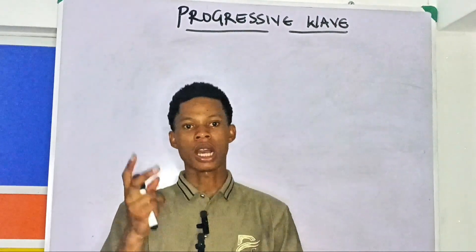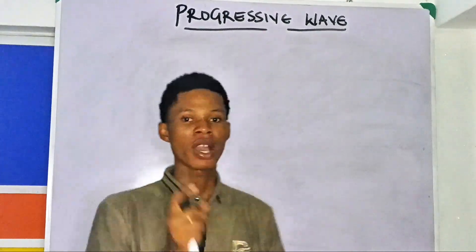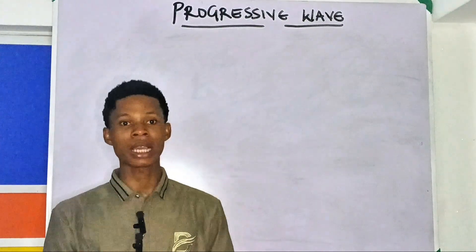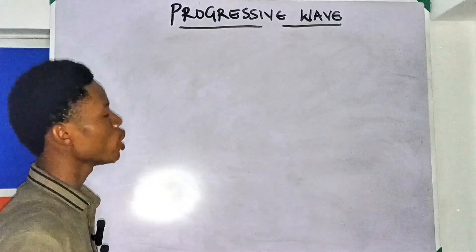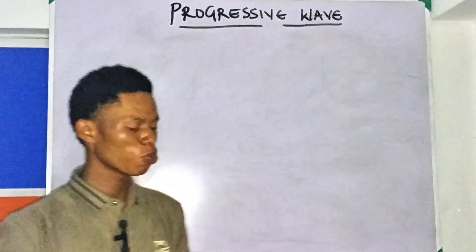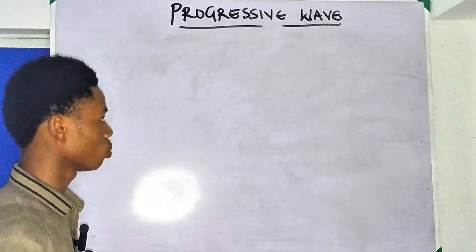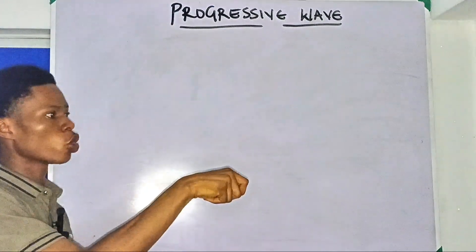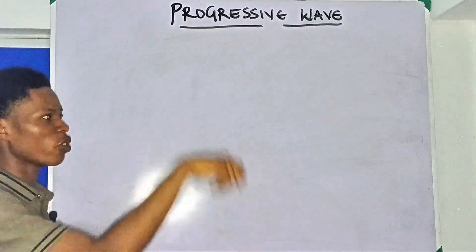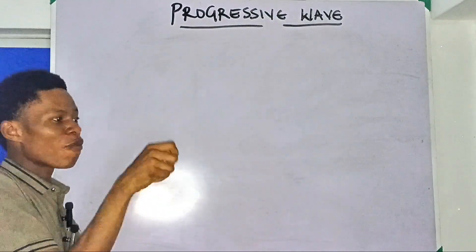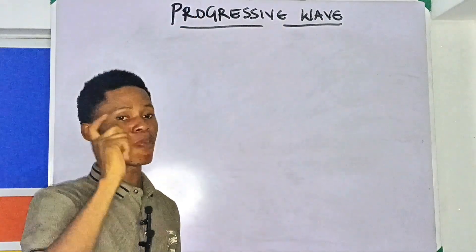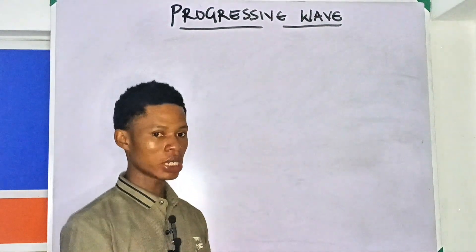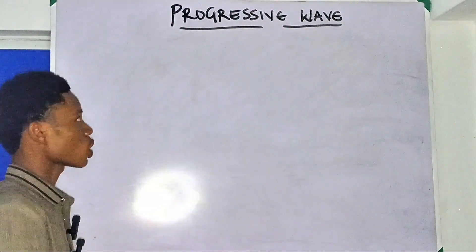Welcome back. In today's video we are going to be looking at progressive waves. I have previously treated stationary waves, so if you missed that video you can go back and watch it. A progressive wave is any wave that spreads out from a vibrating source, transmitting energy from one point to another. A stationary wave is just standing, but a progressive wave is actually moving.